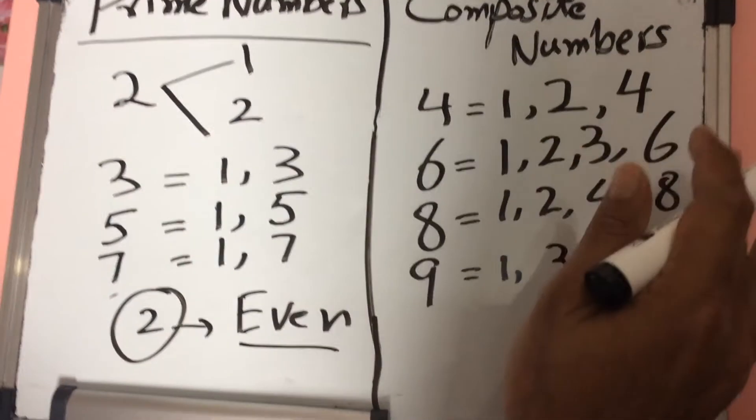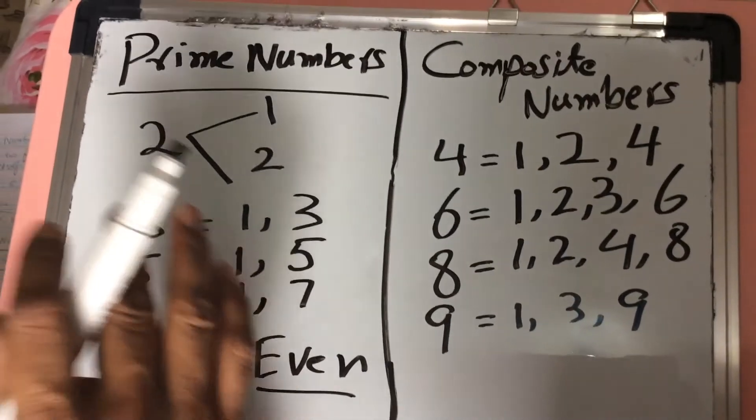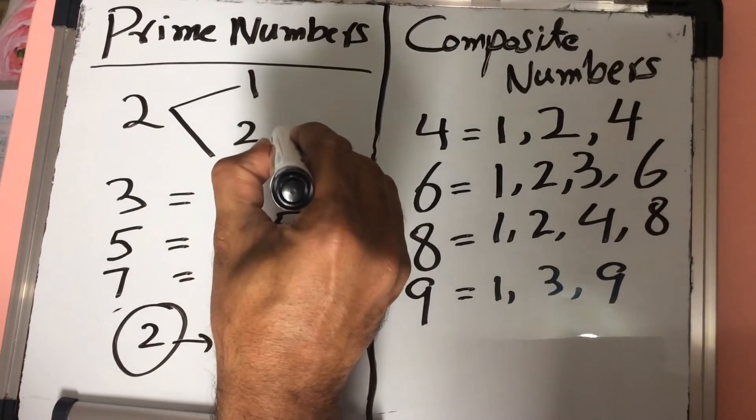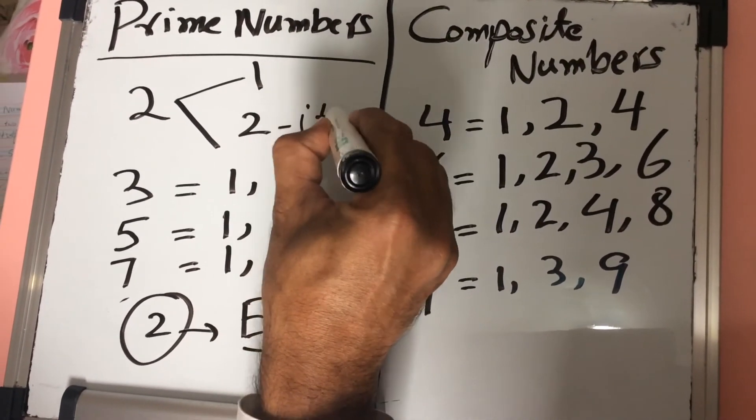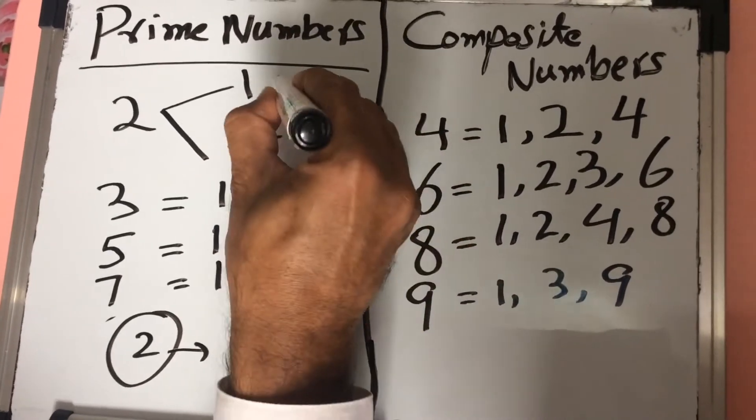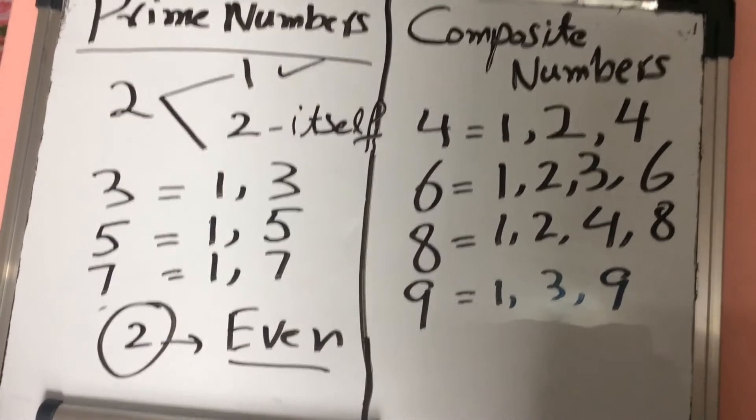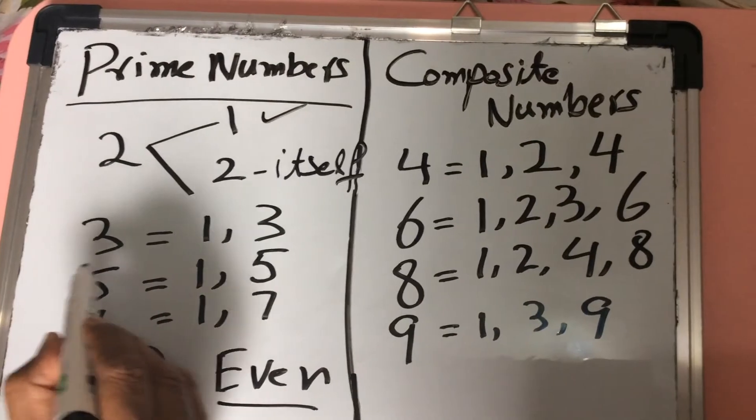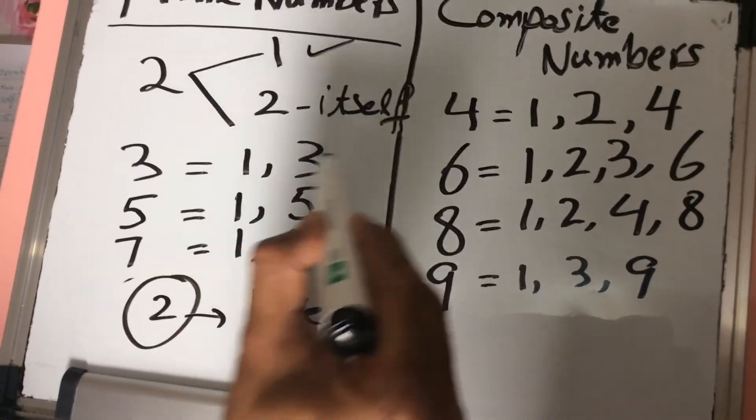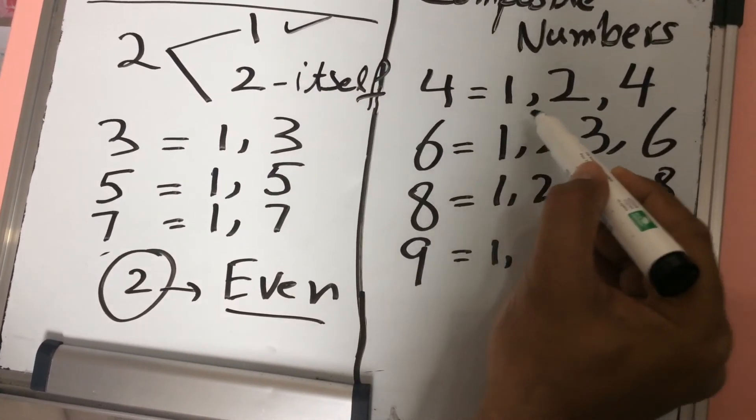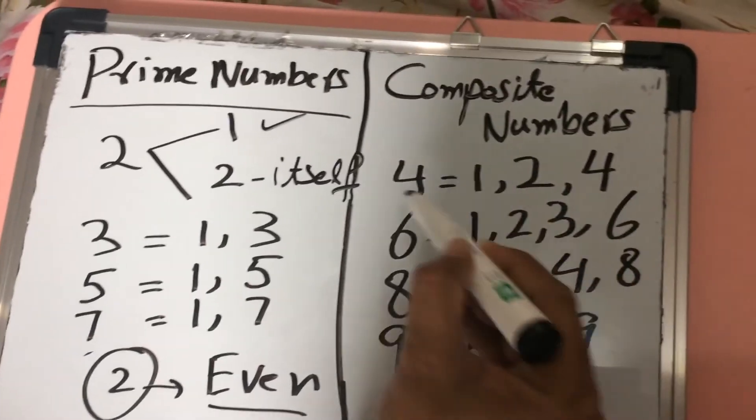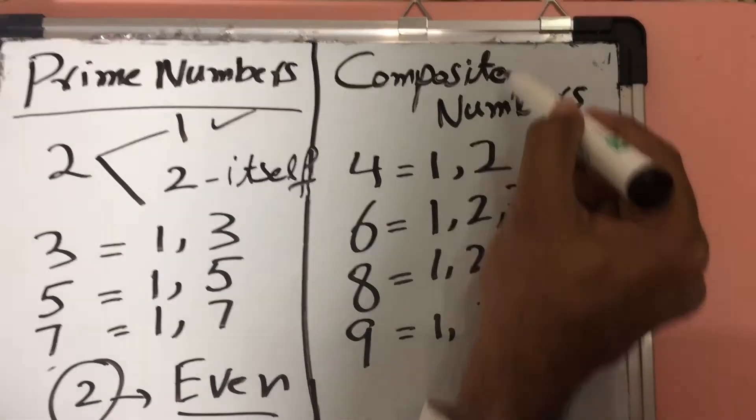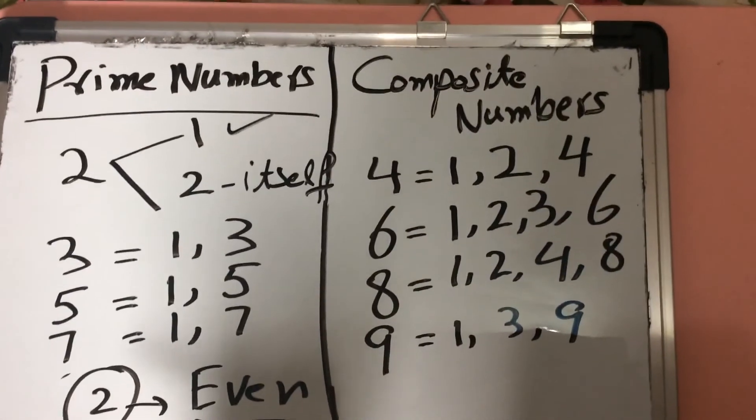So this is the difference between prime numbers and composite numbers. If any number has only 2 factors, itself and 1, it will be a prime number. 3 has 2 factors: 1 and 3, 1 and itself. If there are more than 2 factors, like 4, 6, 8, they will be named as composite numbers.